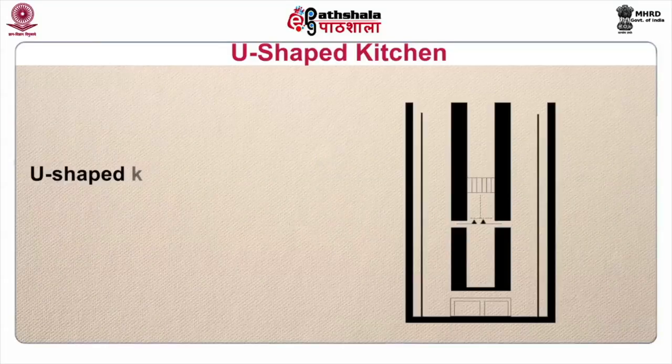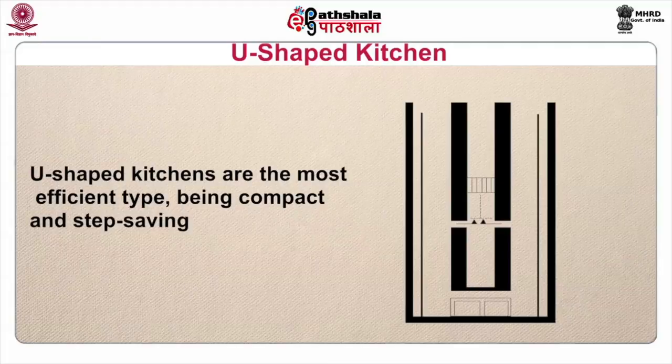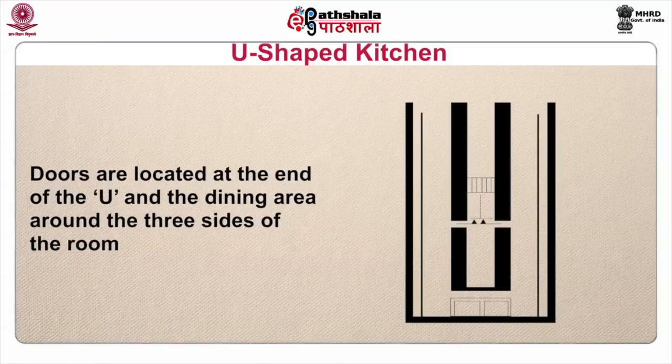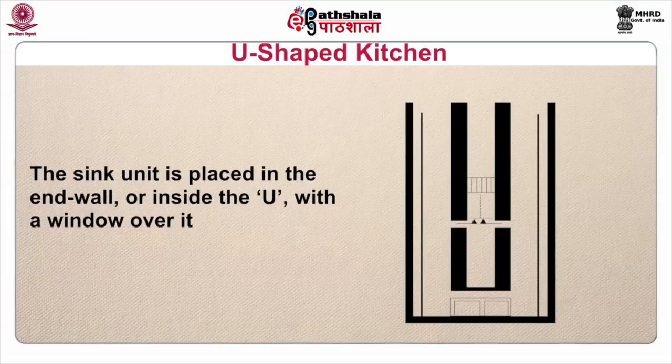U-shaped kitchens are the most efficient type, being compact and step-saving. Doors are located at the end of the U and the dining area around the three sides of the room. The sink unit is placed in the end wall or inside the U with a window over it. There is no chance of criss-crossing in such a plan and work flows easily from one centre to the next. The counters can be fixed to come down on either side and provide additional service space during peak hours, and folded back against the walls after service hours.